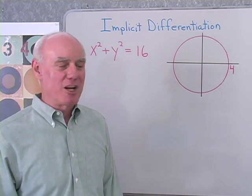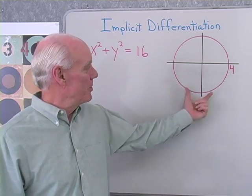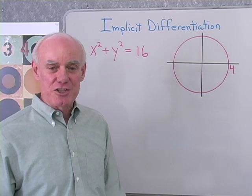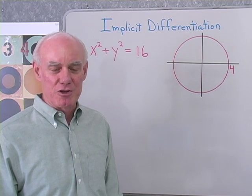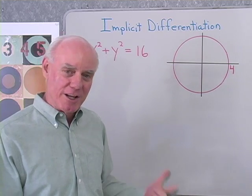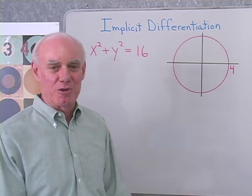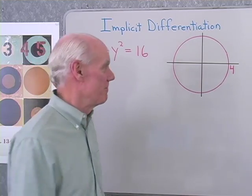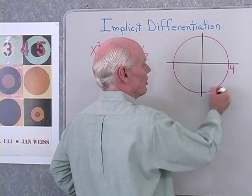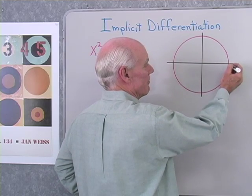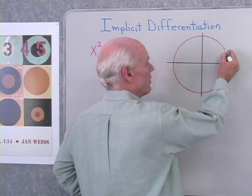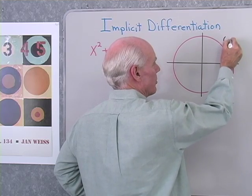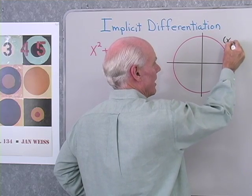Before I start, let's take a look at a picture of a circle and see that we already know what this derivative is going to turn out to be, and then we can check our work when we do the implicit differentiation. Here's a circle with a radius of 4. If I go out to any point on this circle, let's say that's the point x, y.